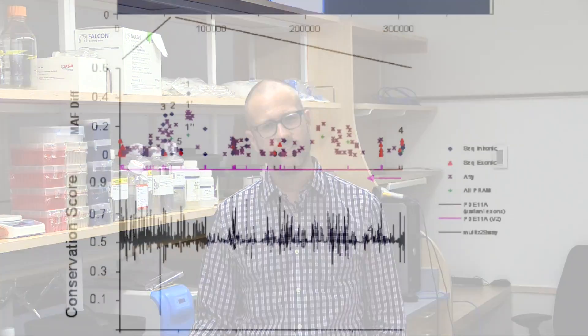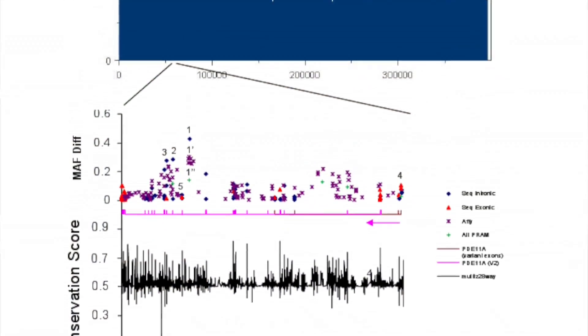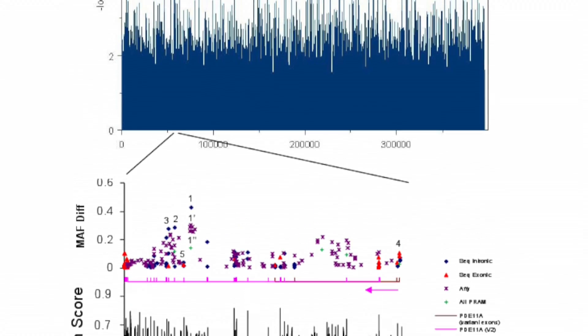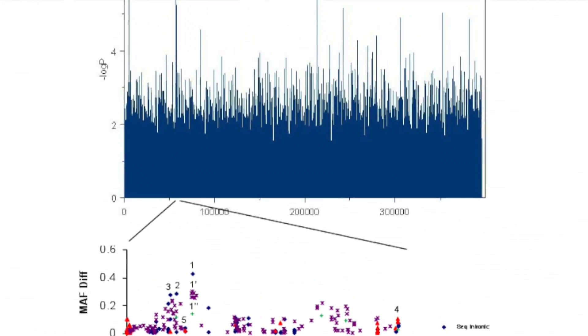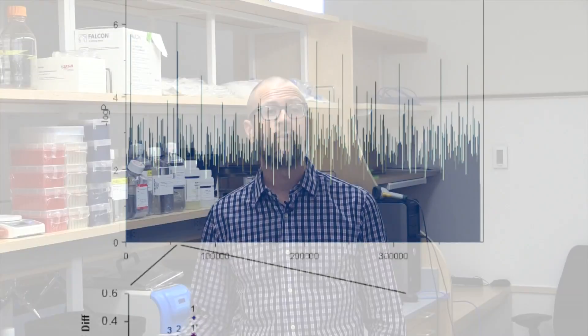If we can identify these genetic variants, we may be able to understand not only more about the biology of asthma, but also what may be able to be done to prevent and treat asthma.